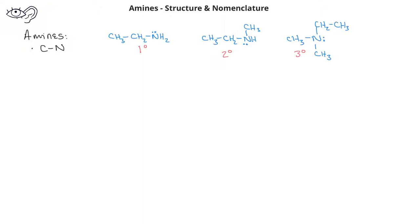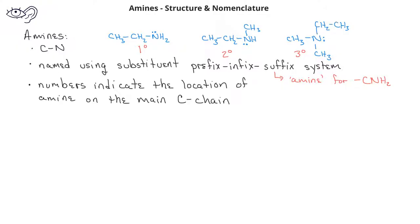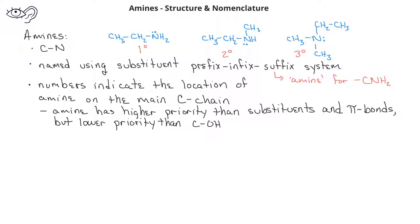In previous videos, we learned about amine functional groups as organic compounds that have a nitrogen bonded to a carbon. We also learned how to distinguish between primary, secondary, and tertiary amines. Now we want to learn how to name amine functional groups. We're going to use the same substituent, prefix, infix, suffix system, where the suffix changes from E for hydrocarbons to amine for amine functional groups. We need to use a number to indicate the location of the nitrogen on the main carbon chain when its position is unclear. The amine has higher priority than substituents and pi bonds, but if we have both an alcohol and an amine, the alcohol has higher numbering priority than the amine.